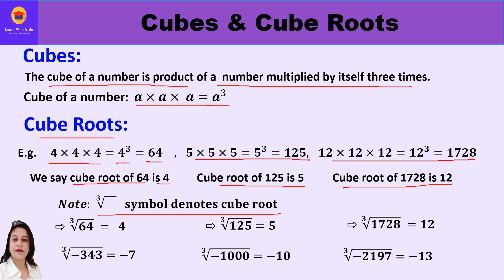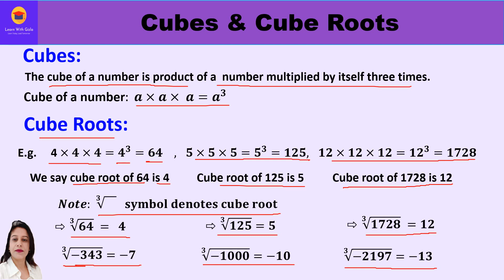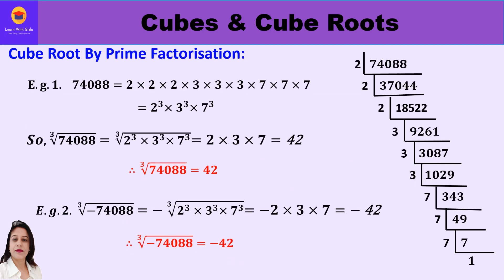This symbol denotes the cube root. So in symbolic form: cube root of 64 is 4, cube root of 125 is 5, cube root of 1728 is 12. We can take a negative integer also — cube root of minus 343 is minus 7, cube root of minus 1000 is minus 10, and cube root of minus 2197 is minus 13.